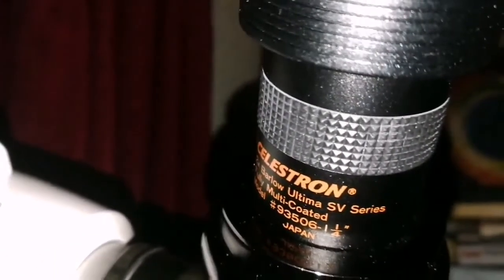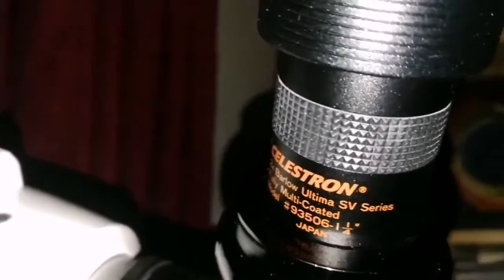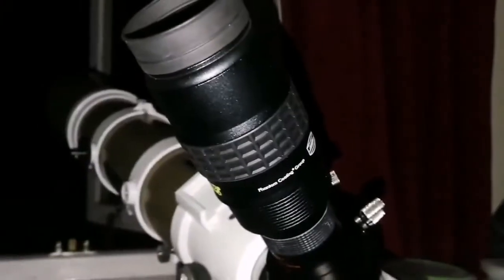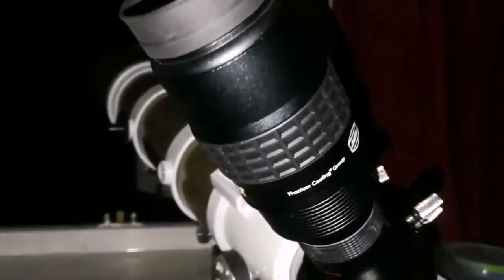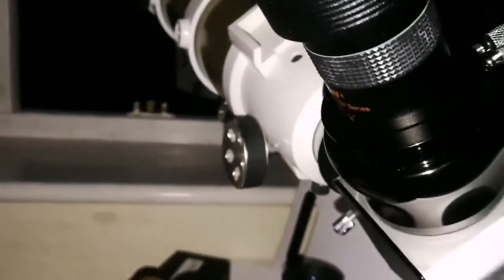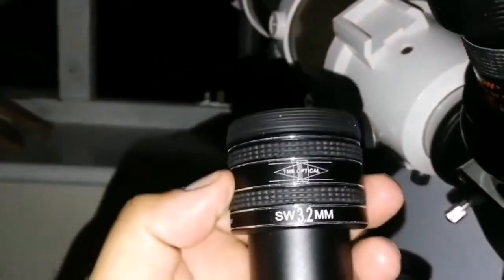This is the Baader Morpheus 6.5mm. I have used the Barlow to increase these two. It's a Celestron Ultima SV series 2 times. So that practically means it is around 3.25mm. So it's really high magnification and it's almost equal to this.